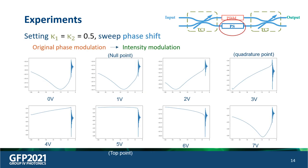If we set Kappa 1 and Kappa 2 equal to 0.5 and sweep the phase shifter, we can convert the original phase modulation to an intensity modulation state. The voltage added on the phase shifter is shown here. The MZM can be balanced at different bias points — for example, for most modulation uses we set it at the quadrature point, and we can also balance it at the null point for RF double-frequency or other applications.